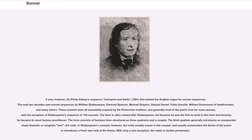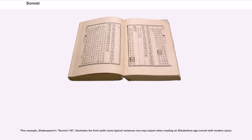The form is often named after Shakespeare, not because he was the first to write in this form but because he became its most famous practitioner. The form consists of 14 lines structured as three quatrains and a couplet. The third quatrain generally introduces an unexpected sharp thematic turn, the volta. In Shakespeare's sonnets, however, the volta usually comes in the couplet, and usually summarizes the theme of the poem or introduces a fresh new look at the theme. With only a rare exception, the meter is iambic pentameter.